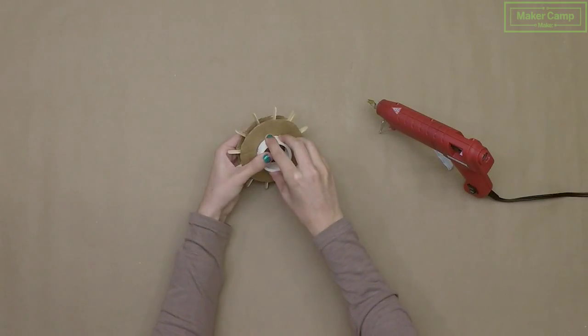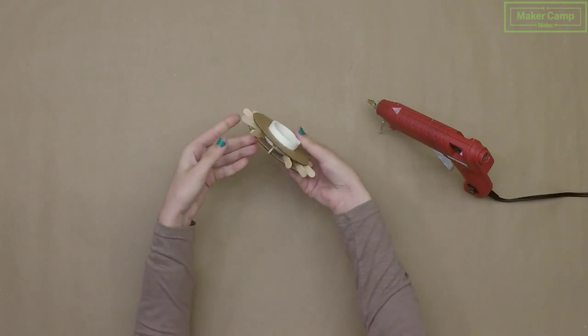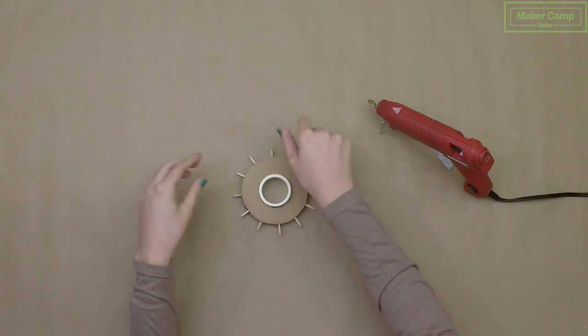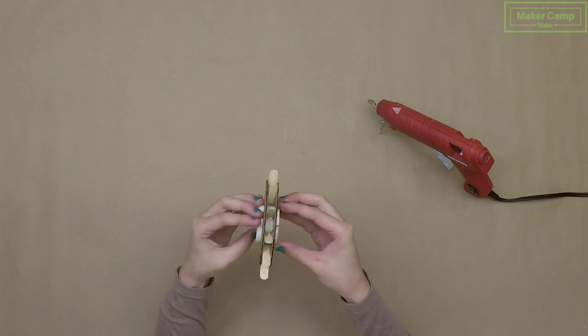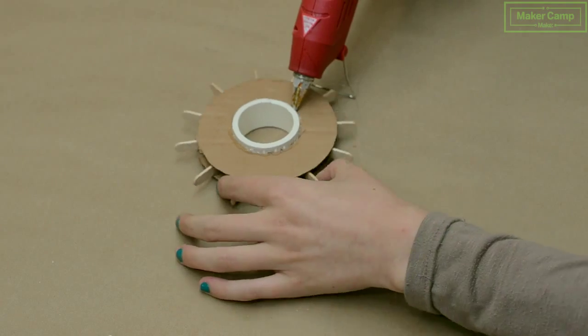Push the PVC pipe through the gear that you made. Make sure the gear is completely level. After you push the pipe through, it should spin freely without any spokes touching the surface that it's on. Once it's level, glue the PVC in place.